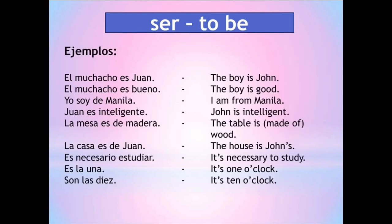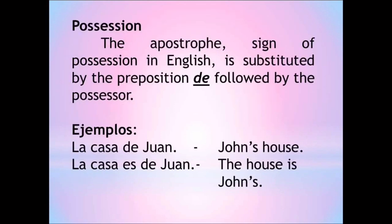Examples: El muchacho es Juan — The boy is John. El muchacho es bueno — The boy is good. Yo soy de Manila — I am from Manila. Juan es inteligente — John is intelligent. La mesa es de madera — The table is made of wood. La casa es de Juan — The house is John's. Es necesario estudiar — It is necessary to study. Es la una — It's one o'clock. Son las diez — It's ten o'clock. For possession, the apostrophe sign of possession in English is substituted by the preposition 'de' followed by the possessor.